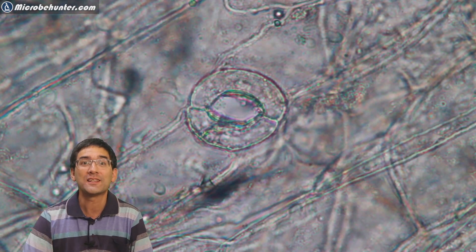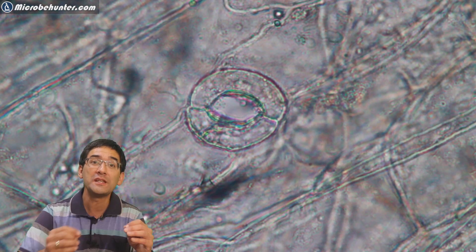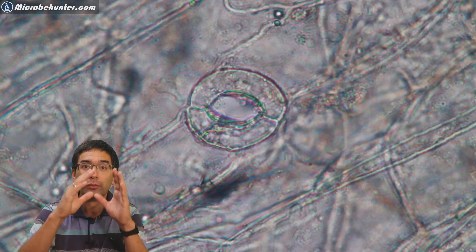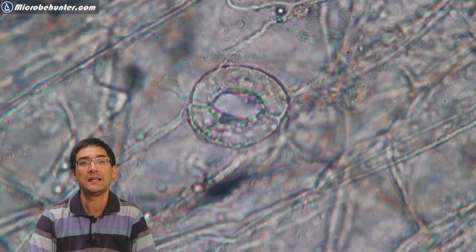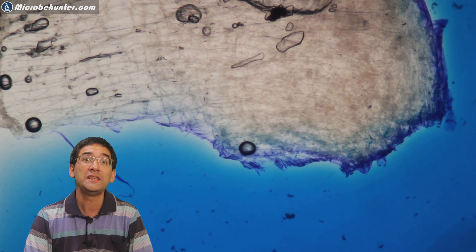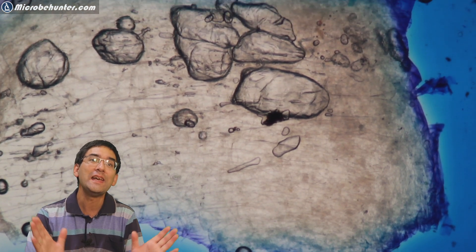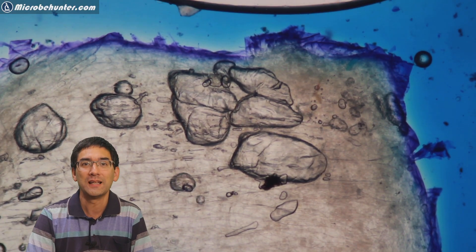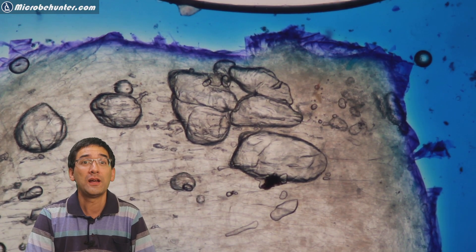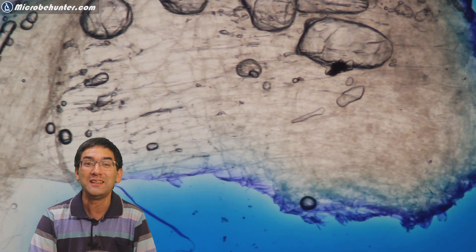Stomates allow for gas exchange because leaves do photosynthesis. Carbon dioxide from the air is able to go into the leaf through those little openings. These are called stomates. Here I see the blue methylene blue which nicely stains the edges of the salad. I was quite interested in finding more of these stomates, and indeed I was successful - there were quite a few of them on the leaf.